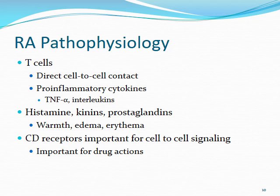T cells rely on direct cell-to-cell contact, and when activated, release pro-inflammatory cytokines further propagating inflammation — including tumor necrosis factor alpha and interleukins. This leads to production of histamine, kinins, and prostaglandins, causing warmth, edema, and erythema at the site of inflammation. CD receptors on T cells are important for cell-to-cell signaling, and there are several drugs — biological products — specifically targeting these CD receptors.